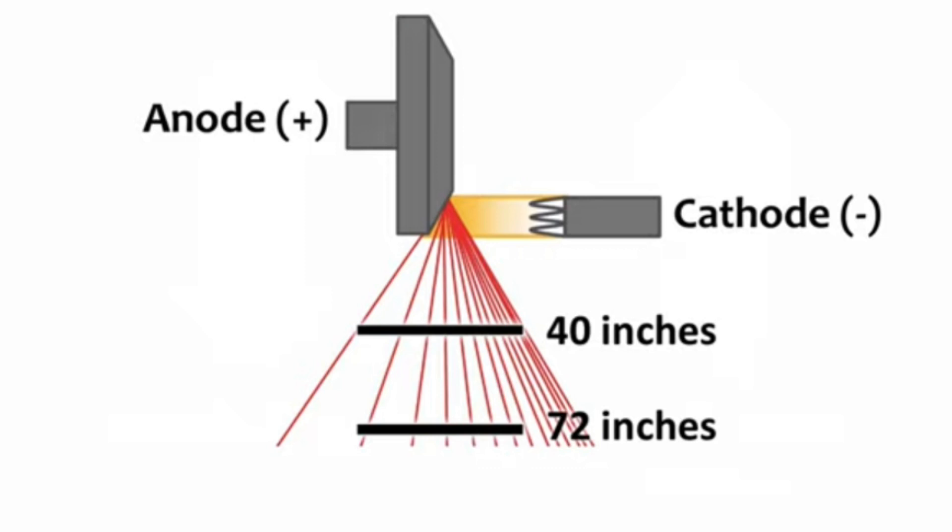Source Image Distance (SID) ke lehaz se: agar hum 40 inches ya 72 inches — jitna ek subject hum door rakhein ge, intensity utni decrease hogi. Jitna ek subject, yani anode ke nazdeek hoga, yani x-ray tube ke nazdeek hoga, utna intensity zyada hogi.